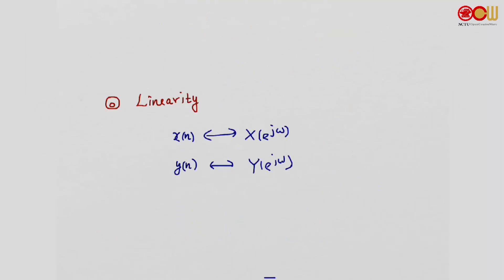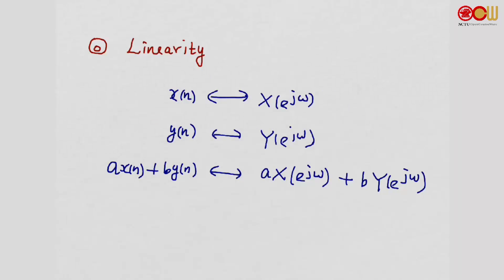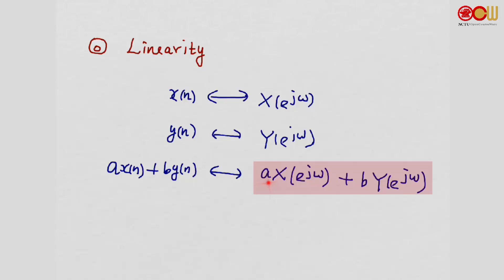The discrete-time Fourier transform has many useful properties, very similar to the continuous-time Fourier transform — even the proofs are very similar. We will go through some of them here; you can find more in the textbook, Sections 2.8 and 2.9. Linearity: if we have two sequences x whose Fourier transform is X, and sequence y whose Fourier transform is Y, then the linear combination of x and y in the time domain has Fourier transform equal to the linear combination of X and Y with the same coefficients.